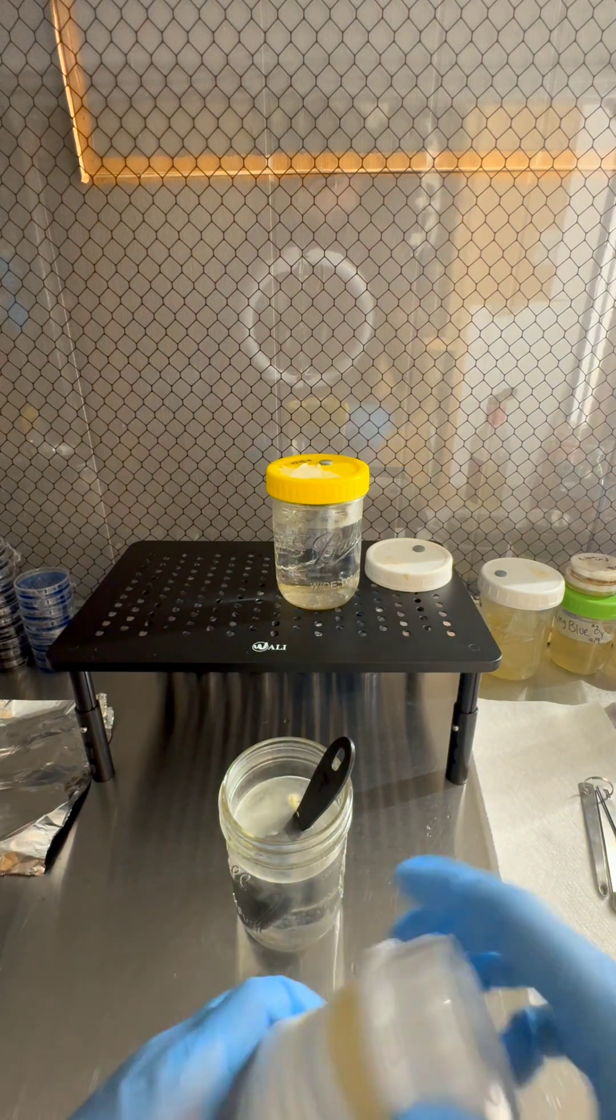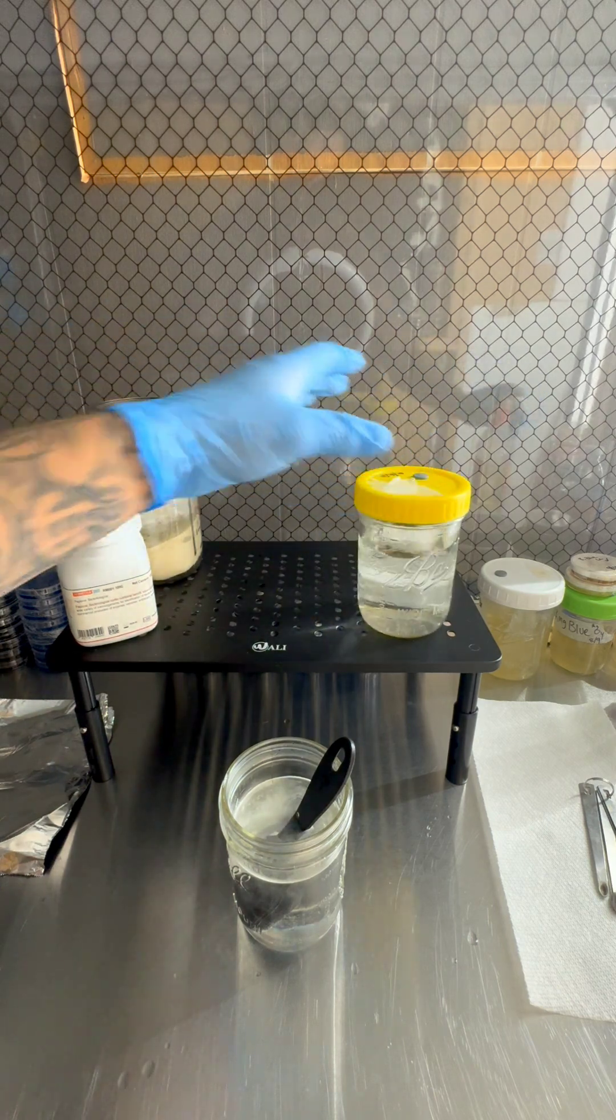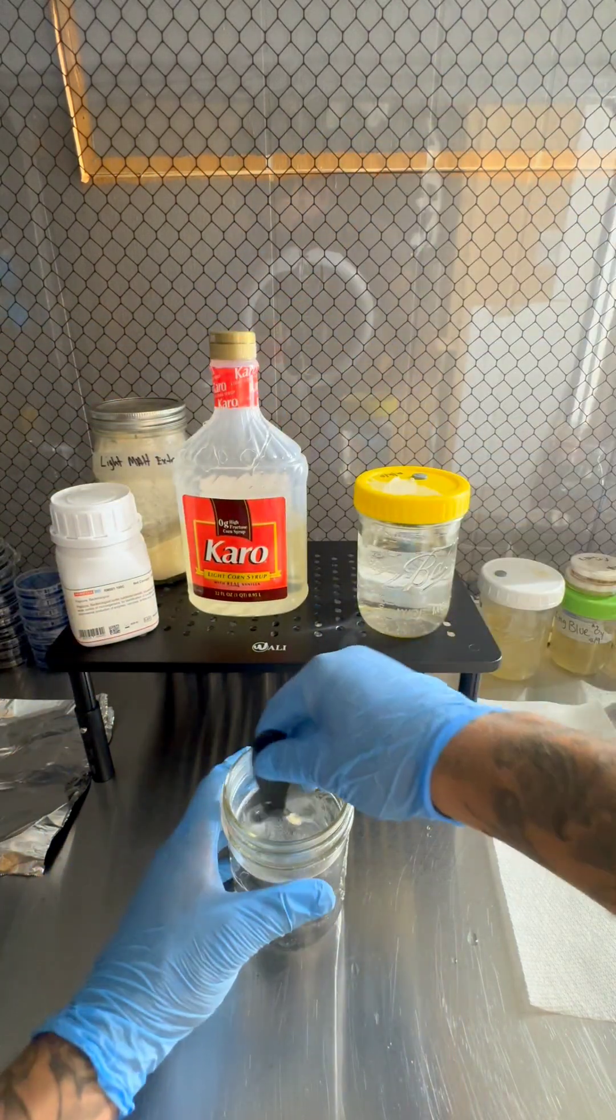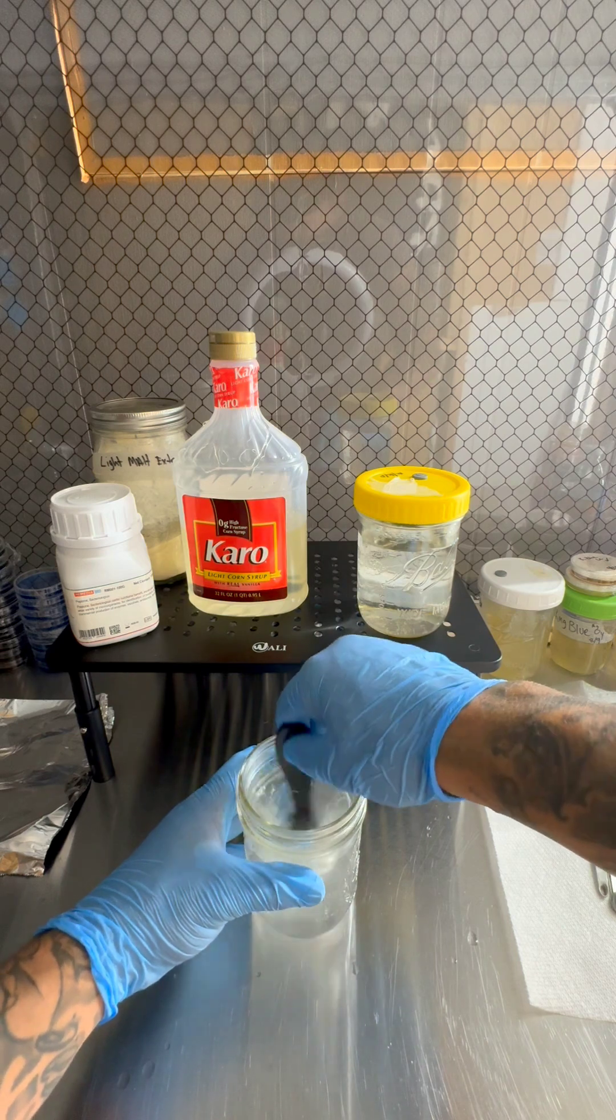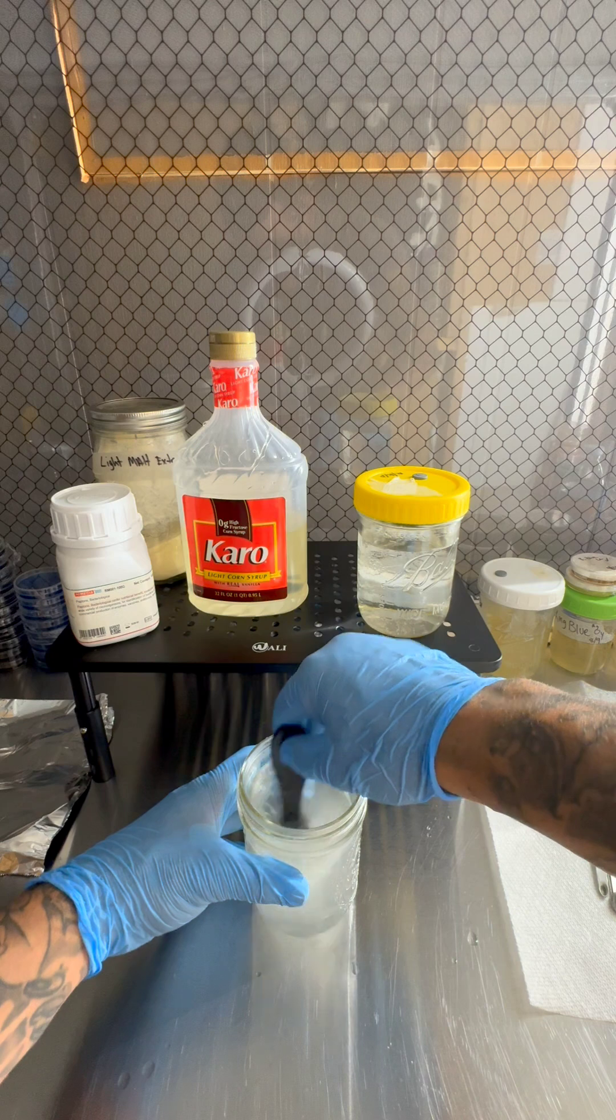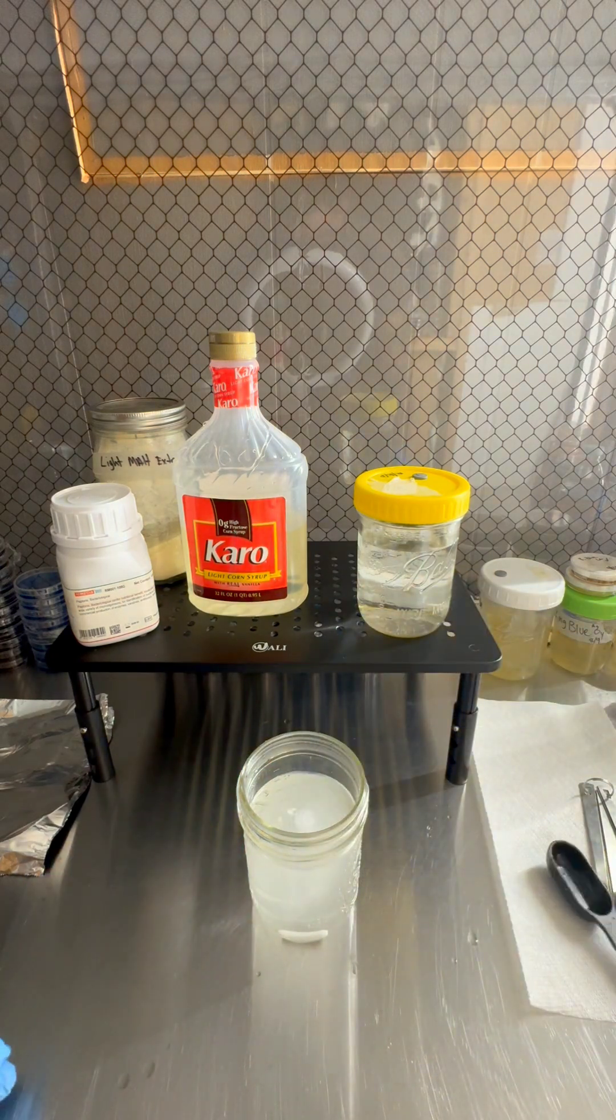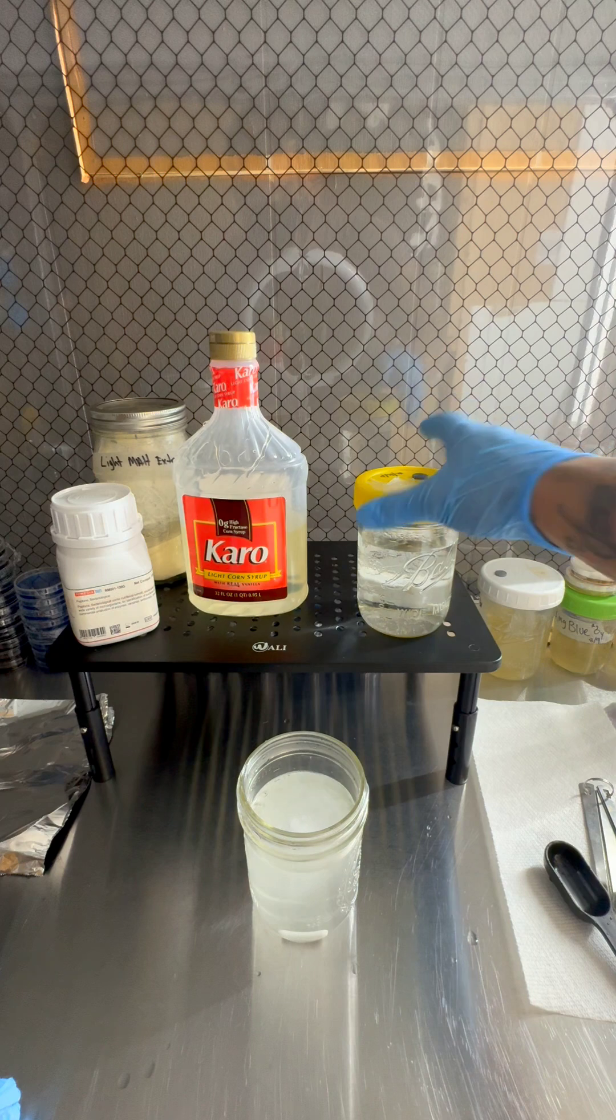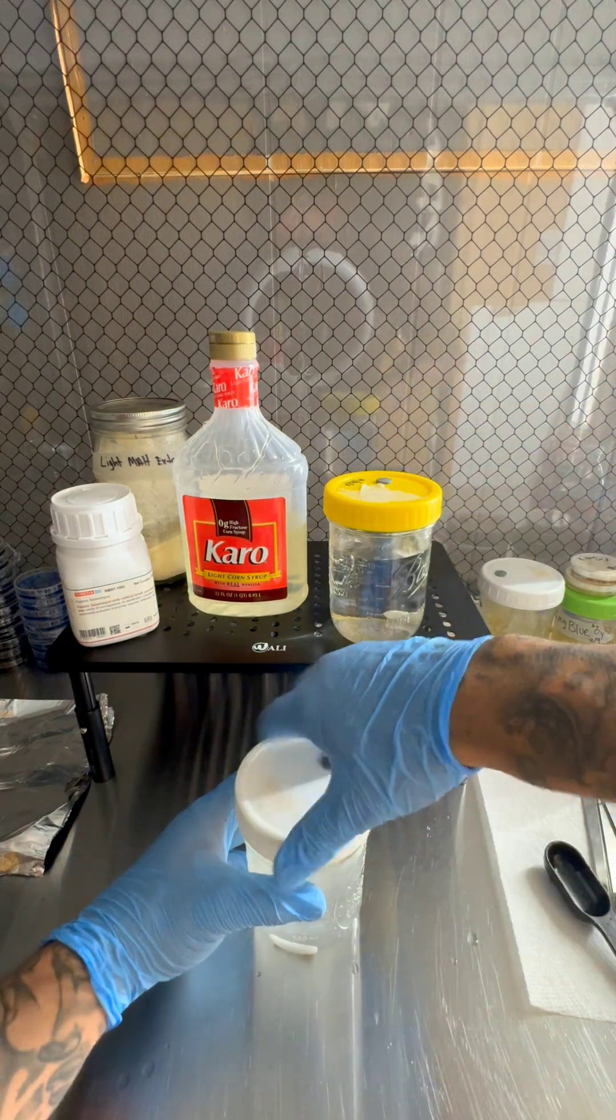Lid on everything. Go ahead and give it a mix. So this is my recipe y'all. This is 300 milliliters of water, a pinch of light malt extract, and a pinch of peptone. I'm going to go ahead and cap it.